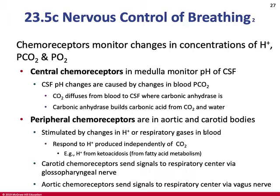Chemoreceptors in the medulla monitor the pH of cerebrospinal fluid, which changes as CO2 crosses the blood-brain barrier and produces carbonic acid in the CSF, releasing protons and dropping pH. The lower the pH gets, the more central chemoreceptors signal breathing muscles to increase contraction duration and rate — breathing deeper and faster to blow off more CO2 and bring pH back up. CO2 is the main driver of respiration rate and depth.